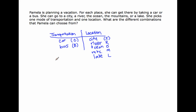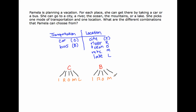She can pick one mode of transportation, so we list the outcomes of the first event: C and B — only two. Then I look at the next event and see how many there are: five. Now I'm going to draw five branches below each letter, and list those outcomes: City, River, Ocean, Mountains, Lake — so I, R, O, M, L under each of C and B.